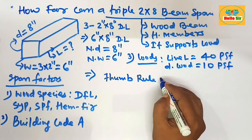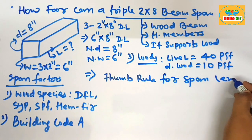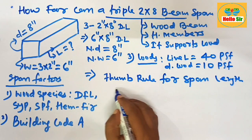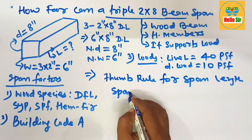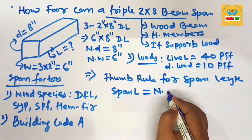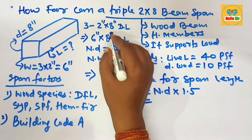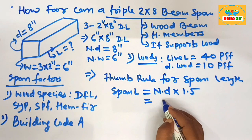Now the thumb rule to determine the span length of the beam—the span length of beam equals the nominal depth multiplied by 1.5. The nominal depth of this beam is about 8 inches multiply 1.5.